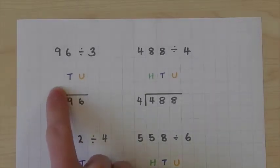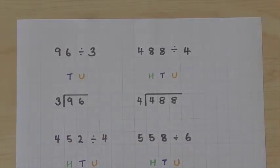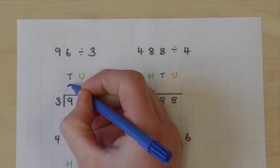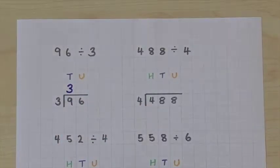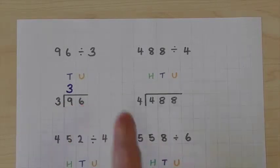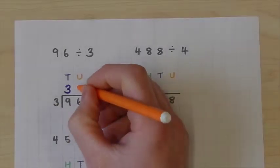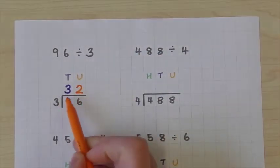We look at our divisor and see how many times it goes into the tens of our dividend. In this case, how many times does 3 go into 9? 3 goes into 9 three times exactly and we write that above. Because it goes in exactly, we can then move on to our units. 3 goes into 6 two times exactly and we write that above. That gives us our answer: 32.